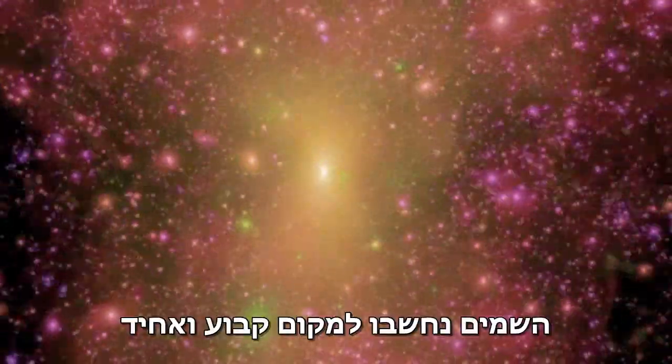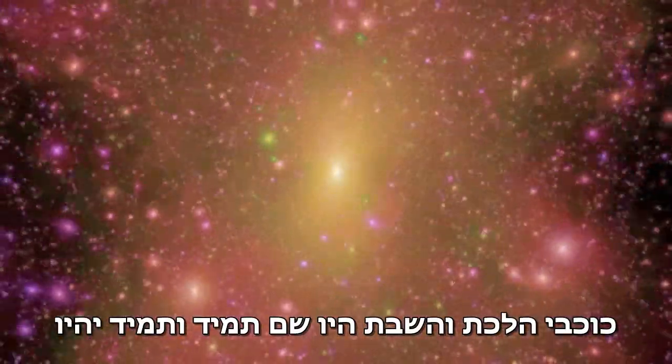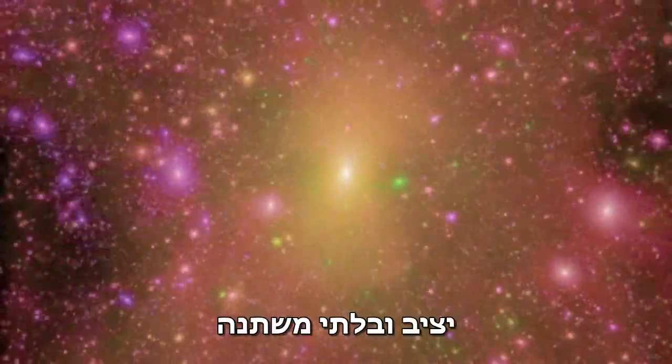The heavens was considered a place of constancy and uniformity. The stars and planets were always there, and they always would be. Steady and unchanging.